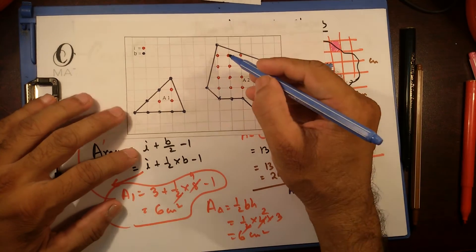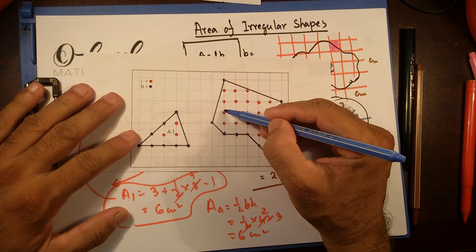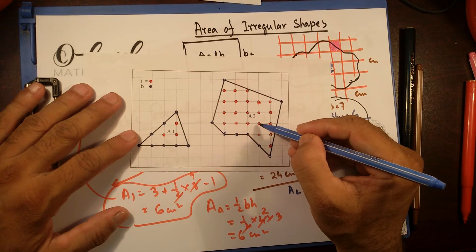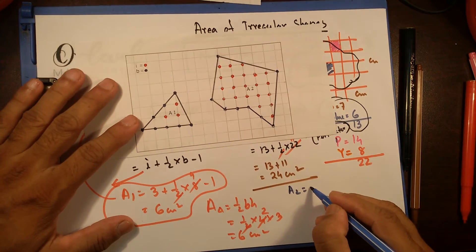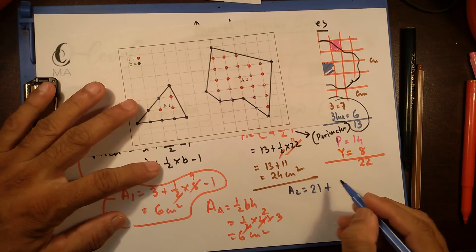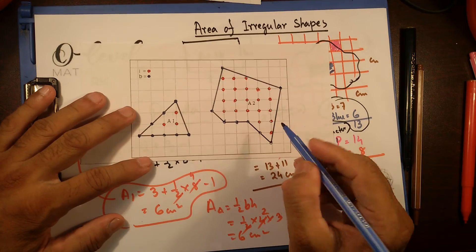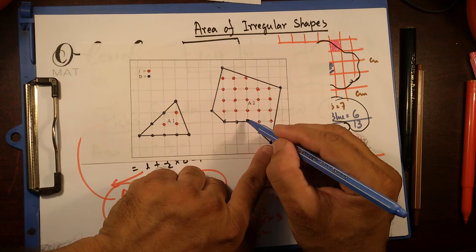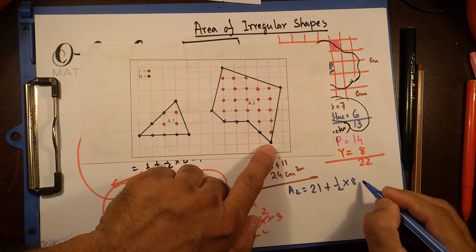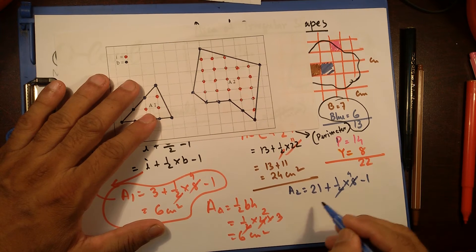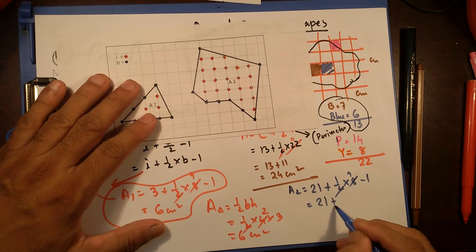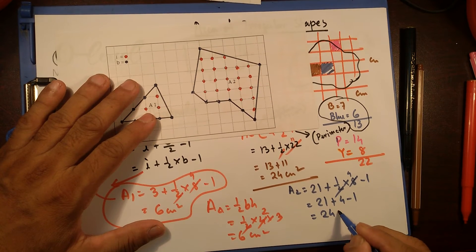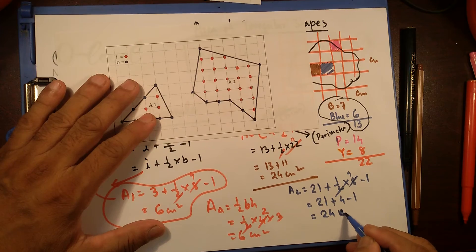Using the formula, inner points I have 1, 2, 3, 4, 5, 6, 7, 8, 9, 10, 11, 12, 13, 14, 15, 16, 17, 18, 19, 20, 21. So this is 21 plus half times B, the points on the boundary: 1, 2, 3, 4, 5, 6, 7, 8. So 8 minus 1, that's going to be 4. So 21 plus 4 minus 1, 21 minus 1 is 20, 20 plus 4 is 24 square centimeters.